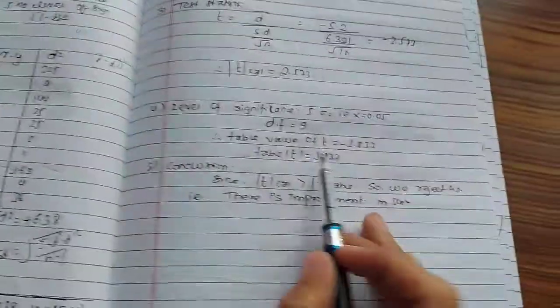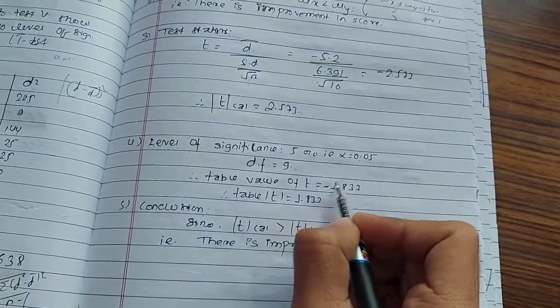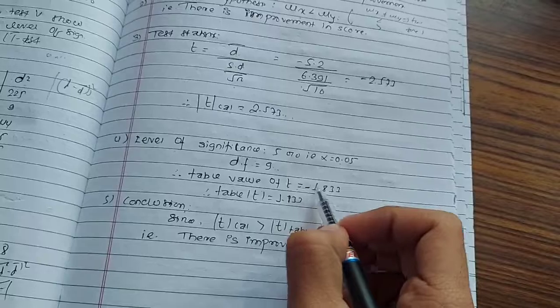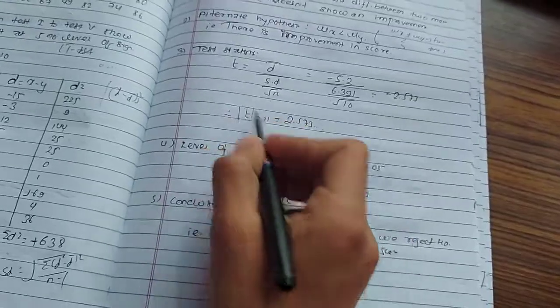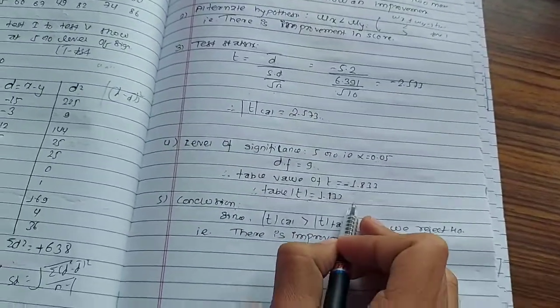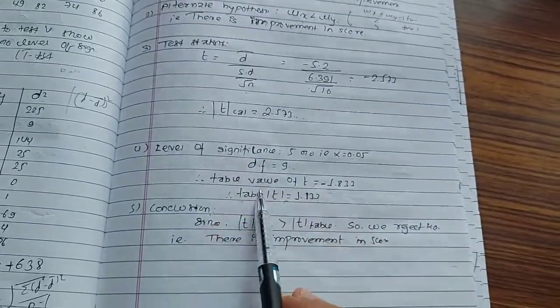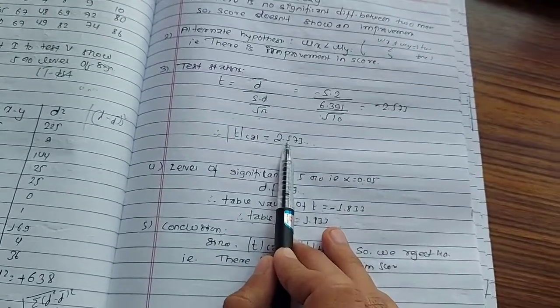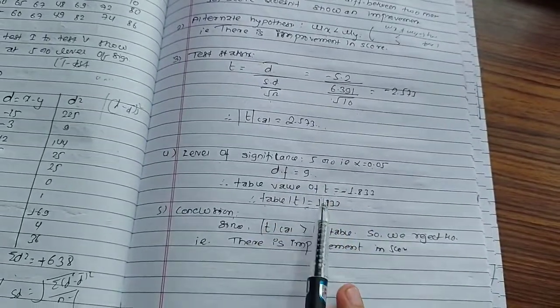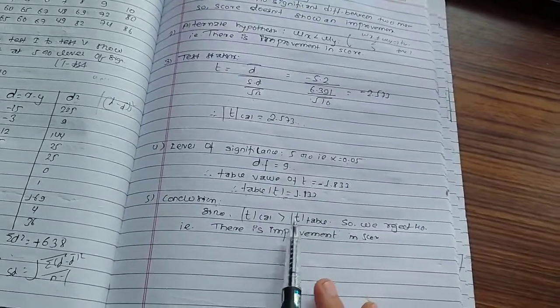Table value 1.833. Minus 1.833. In a one-tailed test, the negative value, the table value is 1.833. Calculated value is greater than table value. Calculated value 2.573 is greater than table value 1.833.